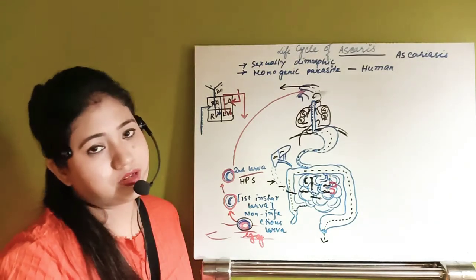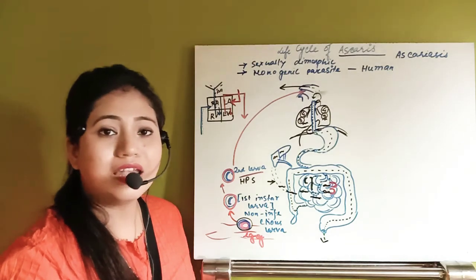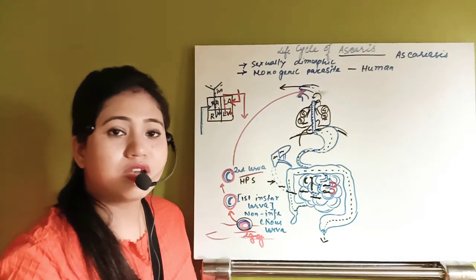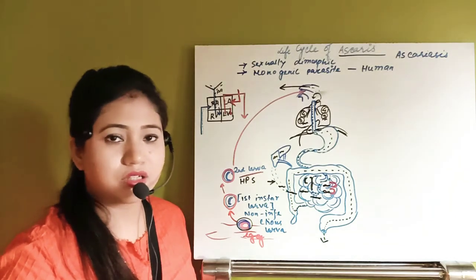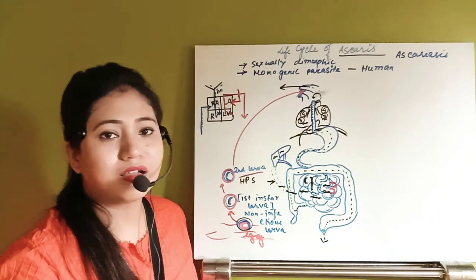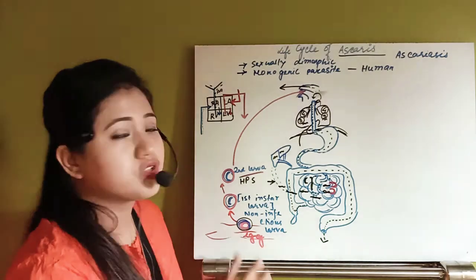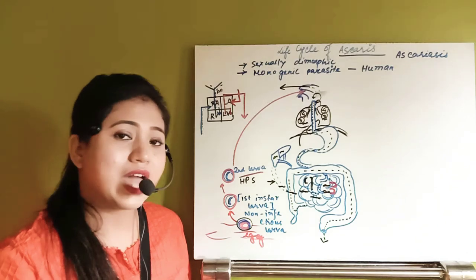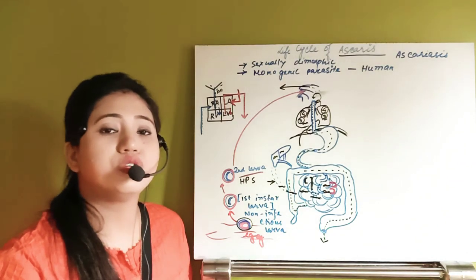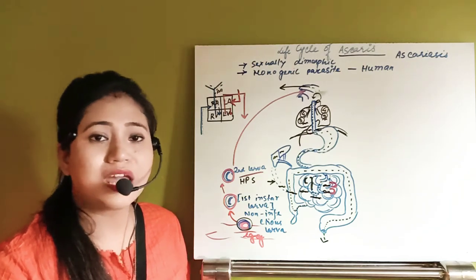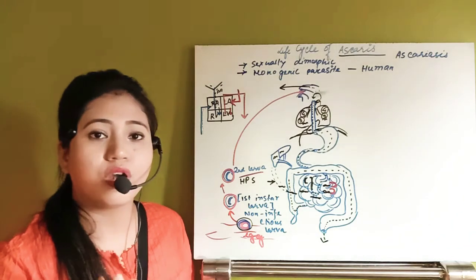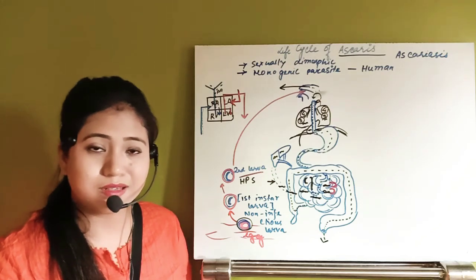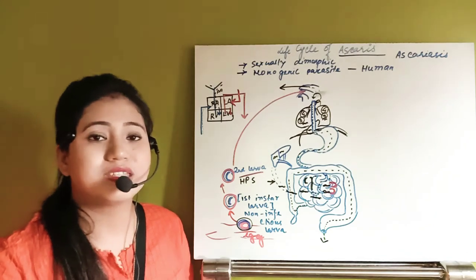If an infected individual excretes near water bodies — as was common in villages where people defecated and urinated near the same water used for drinking, washing food, and cooking — the fecal matter containing eggs contaminates the water. Nowadays, Ascaris infection is much lower because of separate toilets and bathrooms. Earlier, the same water body used for excretion was also used for all household purposes.